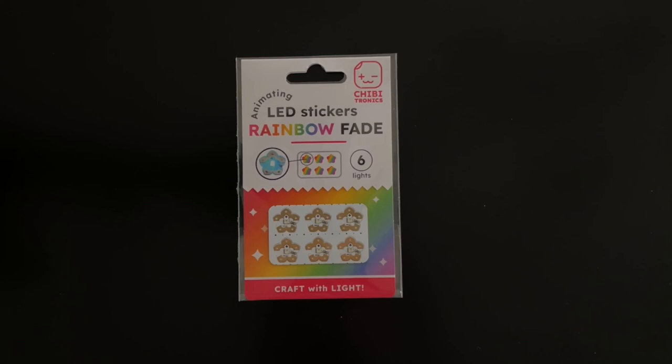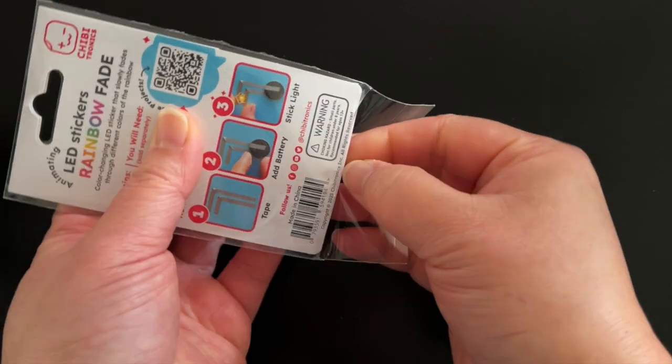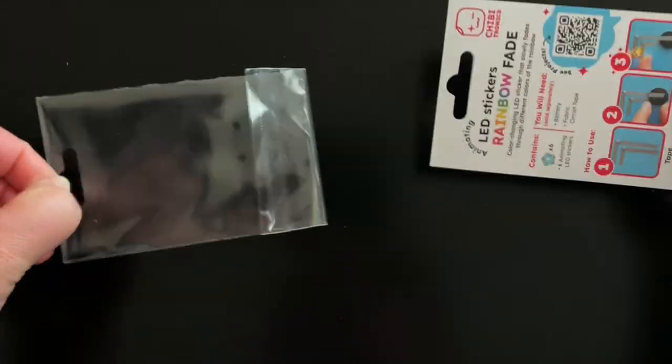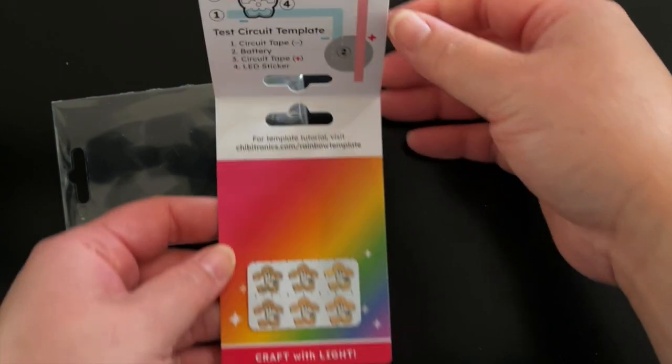To complete the Rainbow Fade test circuit template, remove the lights from the plastic packaging. Fold up the top panel to reveal the test circuit template. You can leave the top flap attached or cut it off to use in a project.